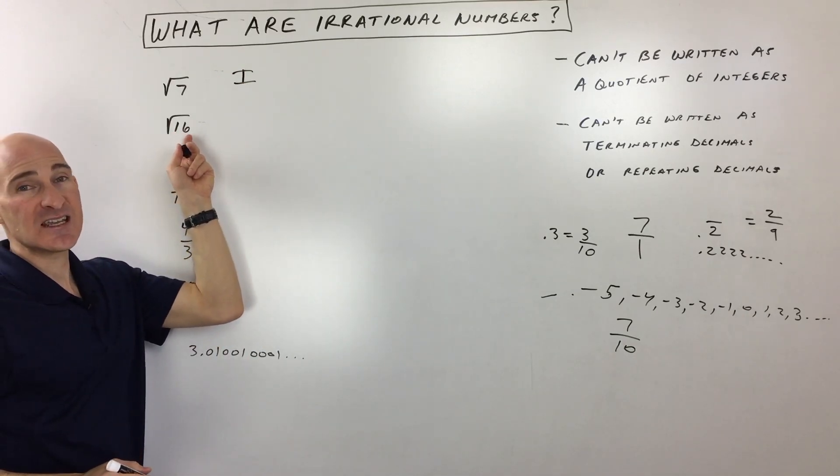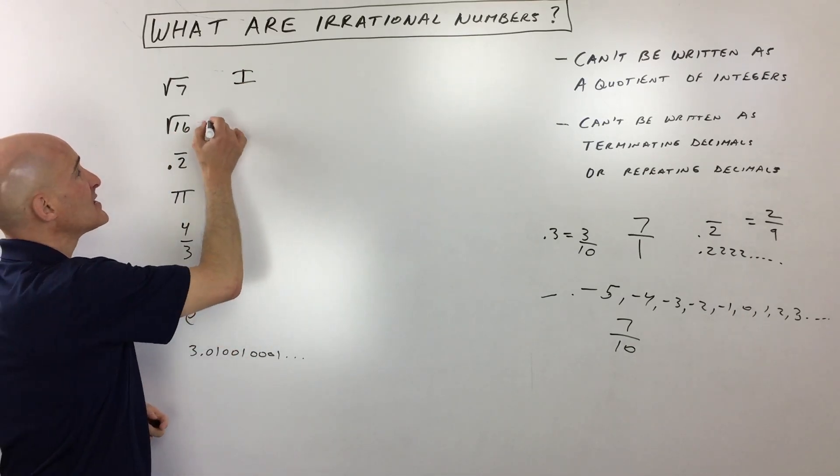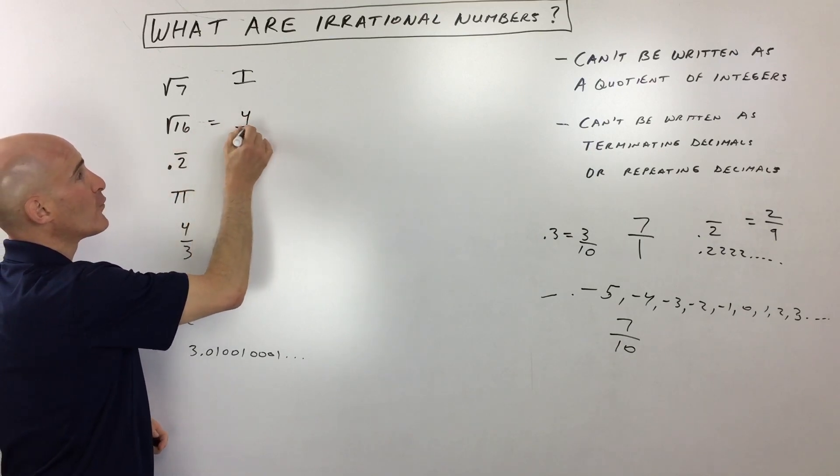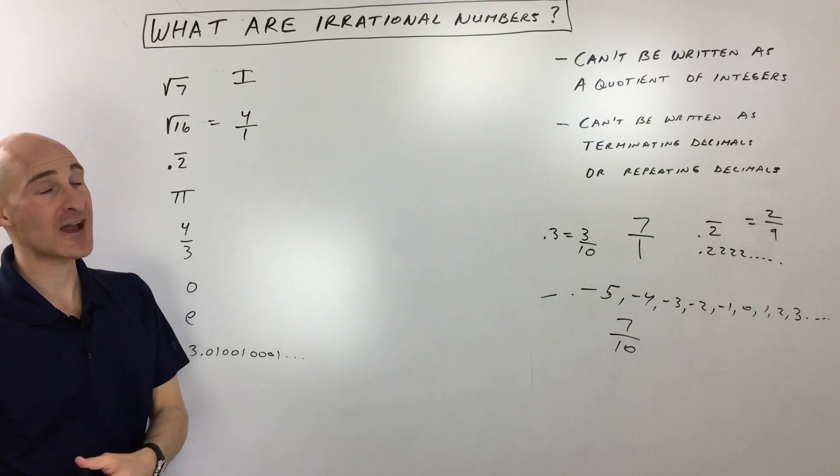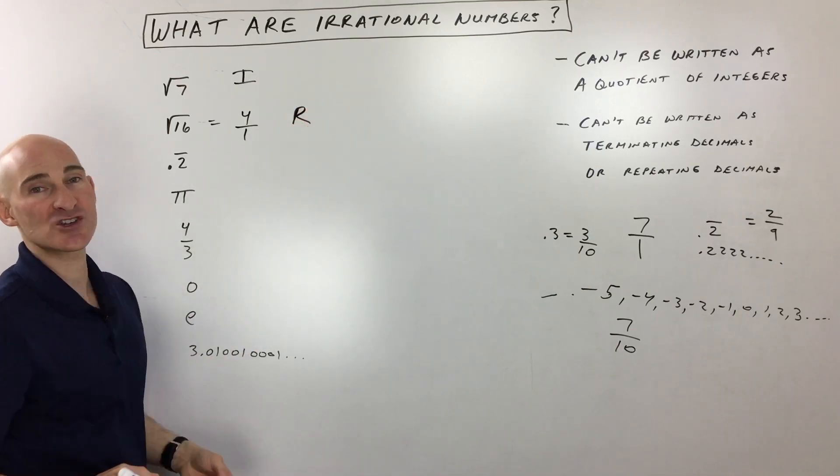Square root of 16, on the other hand, can be simplified to 4 because 4 squared is 16, and 4 can be written as a ratio of an integer divided by an integer. So this is actually a rational number. I'll just put R for rational, okay?